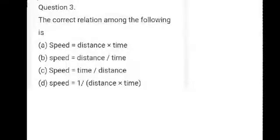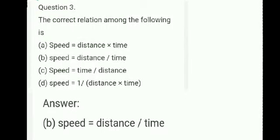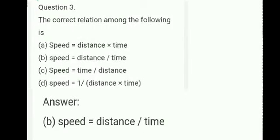Question number three: the correct relation among the following is — Option A: speed = distance × time. Option B: speed = distance ÷ time. Option C: speed = time ÷ distance. Option D: speed = 1 ÷ (distance × time). Answer: B, speed equals distance divided by time.